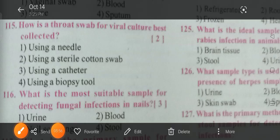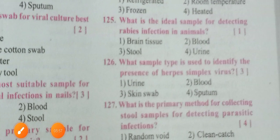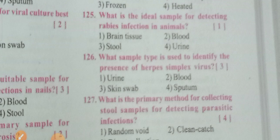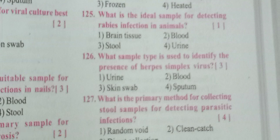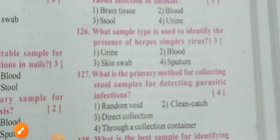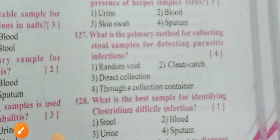What sample type is used to identify the presence of herpes simplex virus? Options: urine, blood, skin swab, sputum. Option 3 is the correct answer: skin swab. What is the primary method for collecting stool samples for detecting parasite infections? A proper collection container should be used.